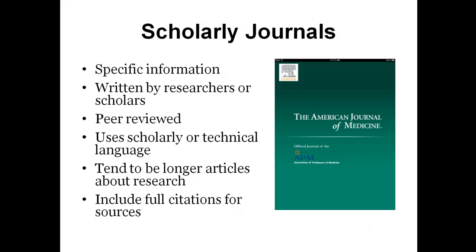Scholarly articles are primary resources for academic assignments and often provide very specific information on a topic. A journal is a collection of articles usually written by scholars in an academic or professional field. An editorial board reviews articles in scholarly journals to decide whether or not they should be accepted. Keep in mind that scholarly articles are not geared toward general interests — they are more focused on academic topics. Also, the peer review process takes time, so scholarly articles are not always the best sources of information on current events.